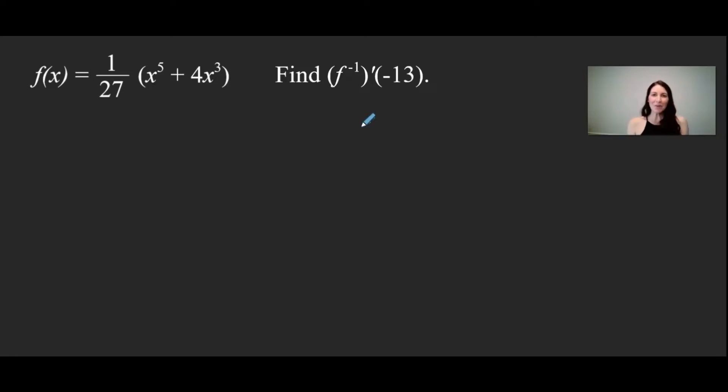I like to set it up in a way that I can organize my information. So I'm going to write f of x here and I'm going to put space to write an ordered pair. And then I'm going to put f inverse of x, so the inverse function of f of x, and its ordered pair. Then underneath I set up the derivatives.